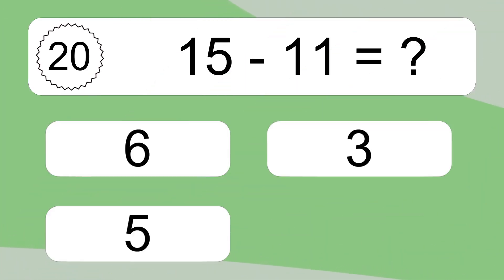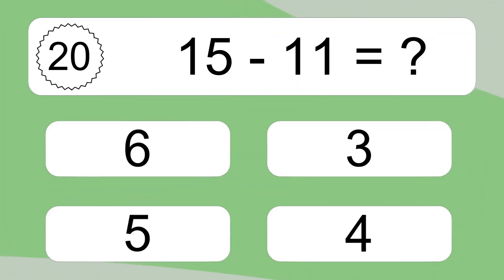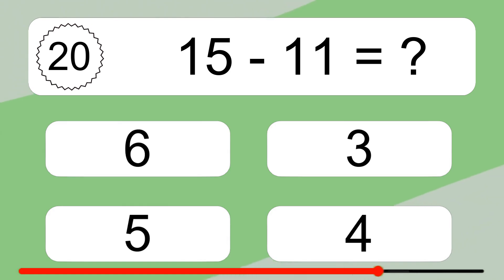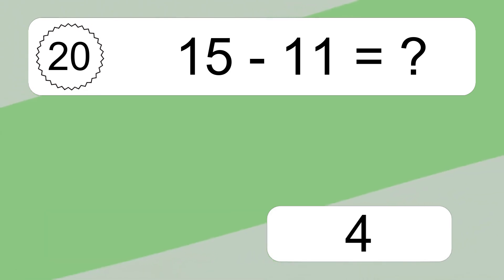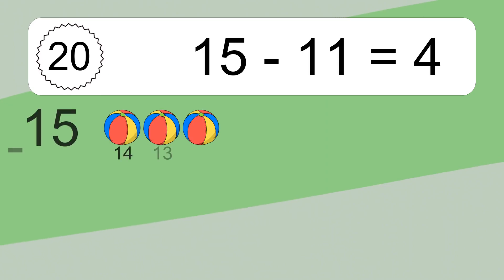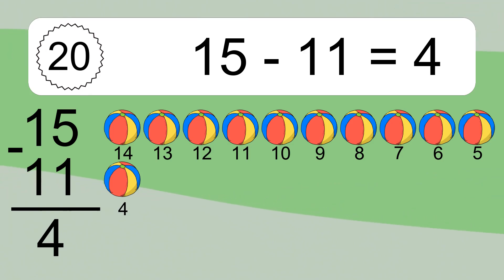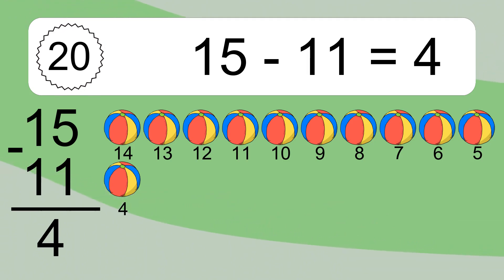15 minus 11 equals what? 15 minus 11 equals 4. Let's count it: 14, 13, 12, 11, 10, 9, 8, 7, 6, 5, 4.